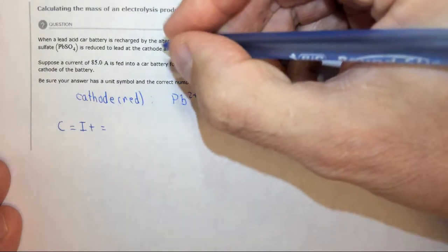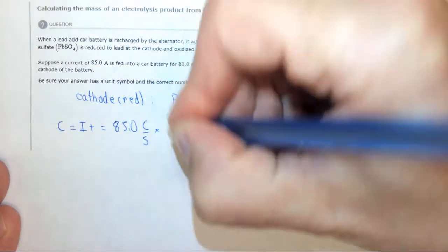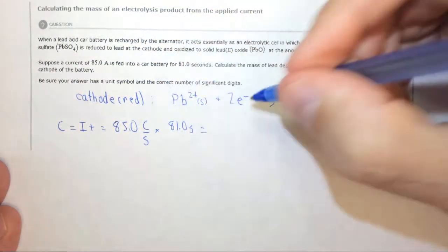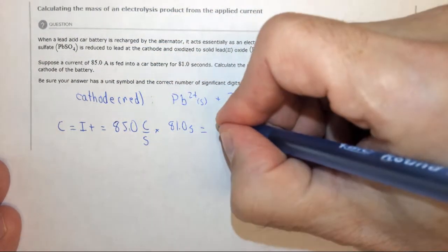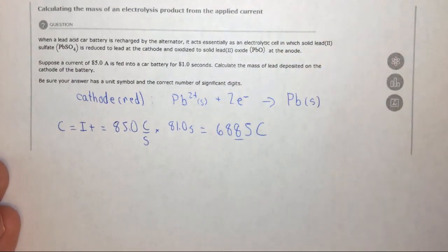Well in this case the current is 85.0 amps, which is Coulombs per second, times 81.0 seconds. And those both have three significant figures. So we get 6885, where that's the sig fig, Coulombs of charge.